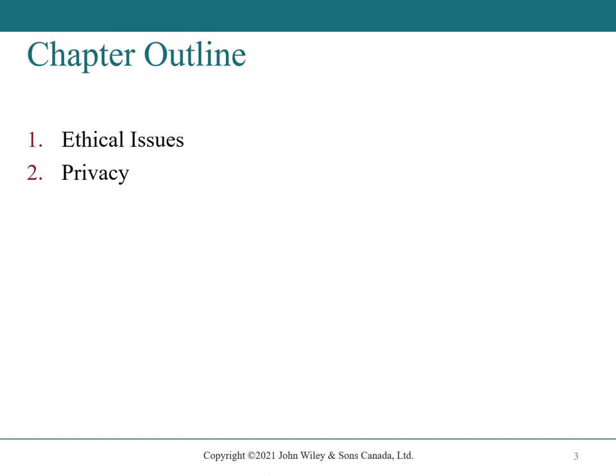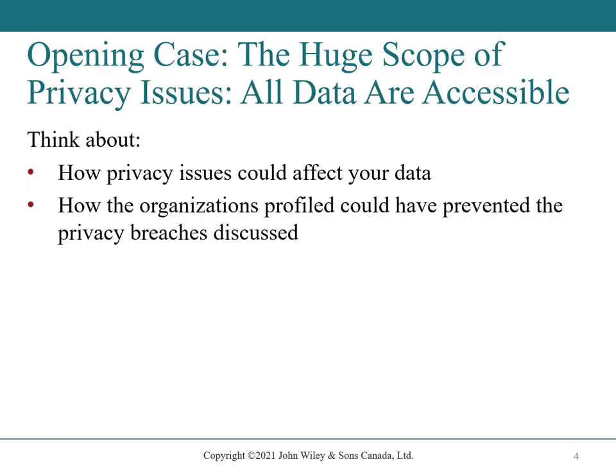Chapter Outline: one, ethical issues, and two, privacy. Opening case: the huge scope of privacy issues — all data are accessible. When you read this section in the book, think about how privacy issues could affect your data, and how the organizations profiled could have prevented the privacy breaches discussed. These are the kinds of questions that make really good short answer questions for future exams.